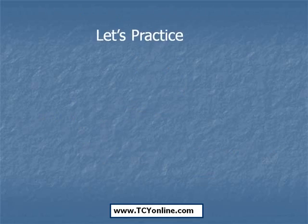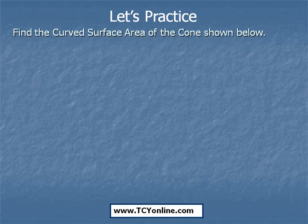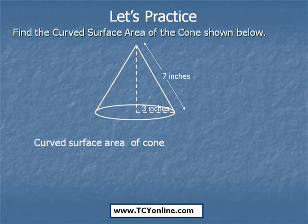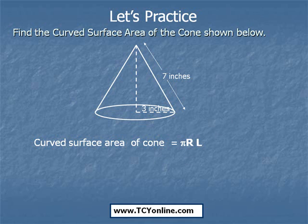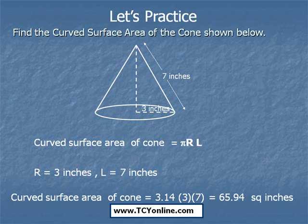Now let's try this question. We need to find the curved surface area of the given cone, whose slant height is 7 inches and the radius of the circular base is 3 inches. Curved surface area of a cone is simply π × r × l. Plugging in π = 3.14, r = 3 inches, and l = 7 inches, we get the curved surface area as 65.94 square inches.